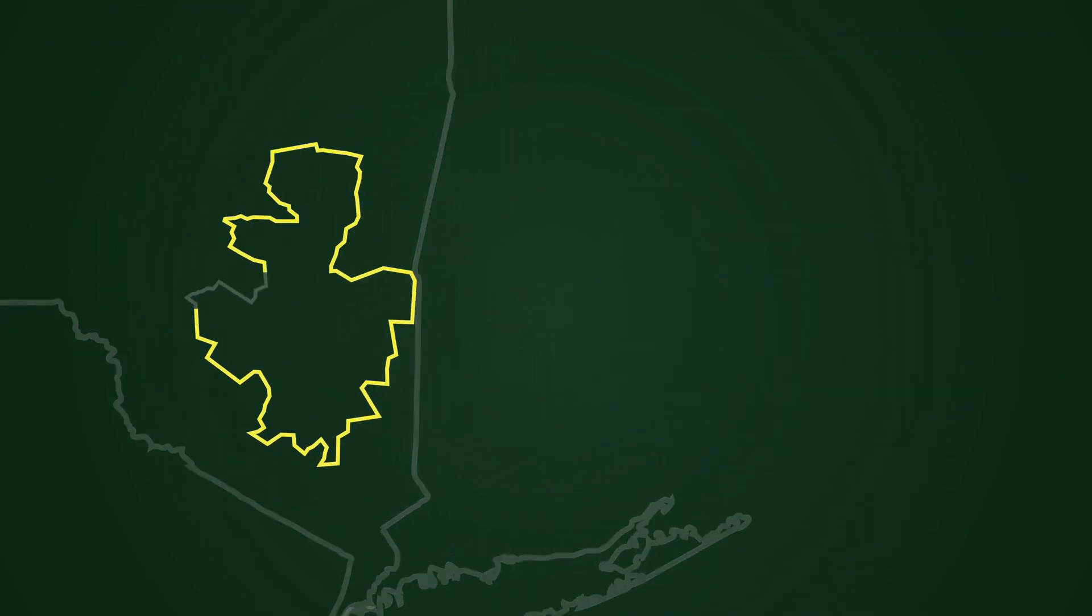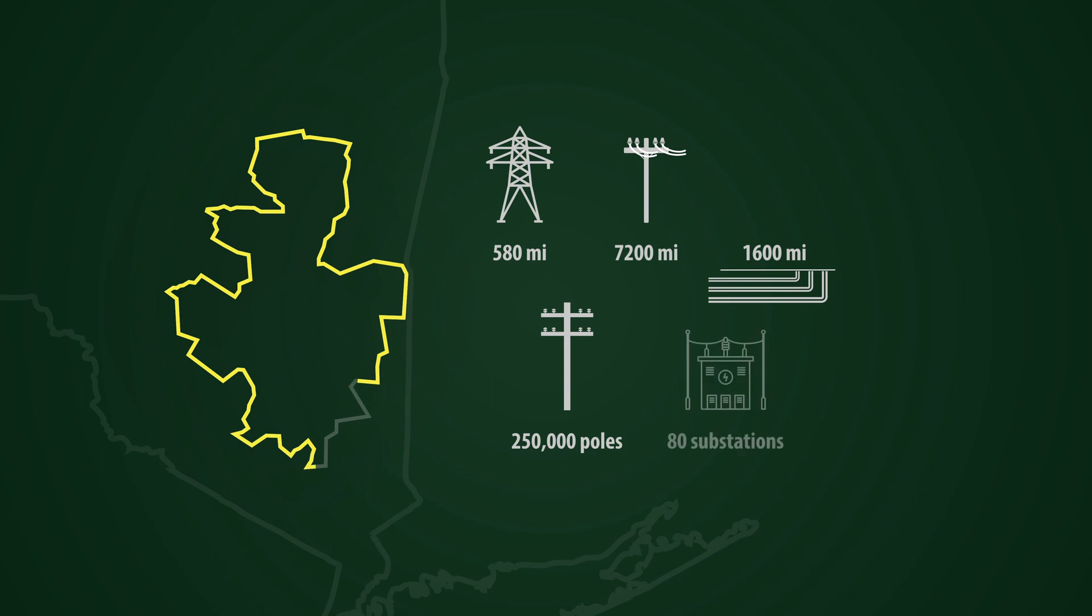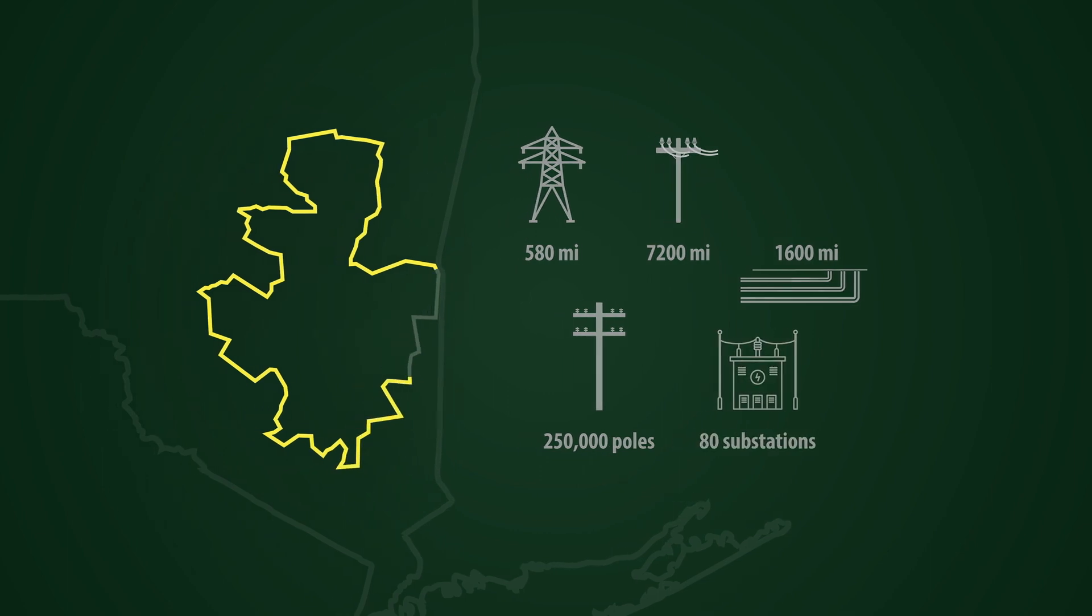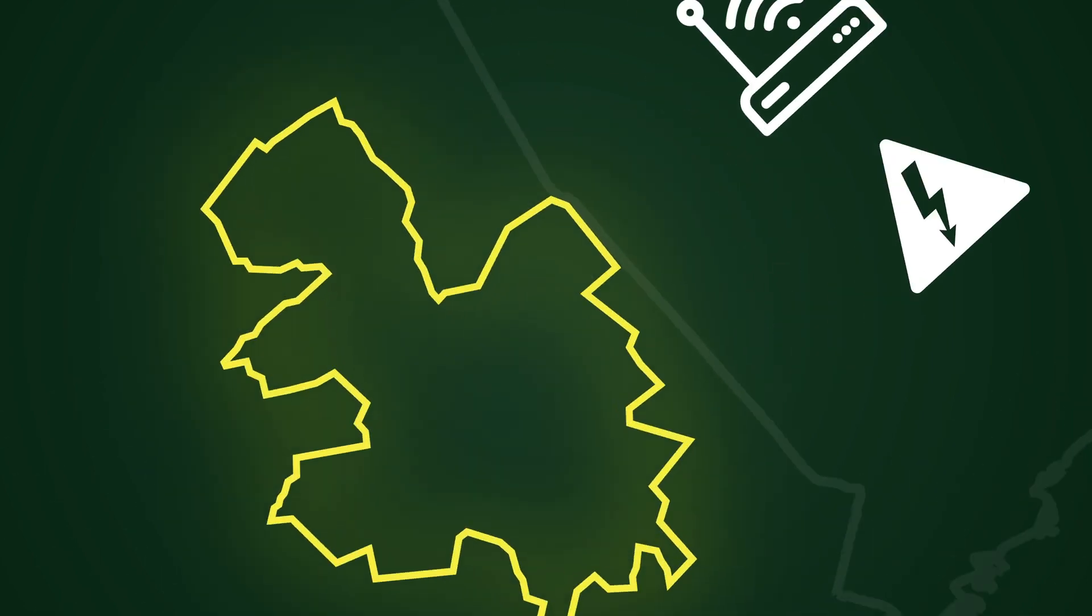Our electric network is expansive. It spans hundreds of miles of transmission and distribution lines, thousands of utility poles, and more than 80 substations. Filling out this system is an array of switching, monitoring, communications, and protective equipment that ensure the grid's safe, efficient, and reliable performance.